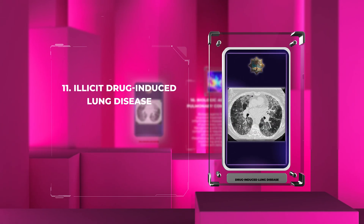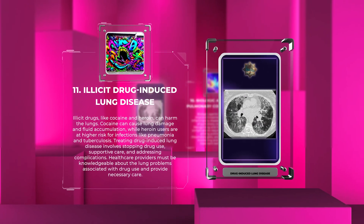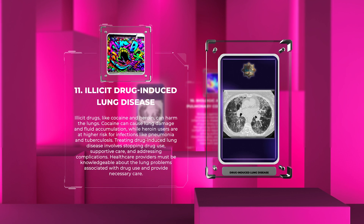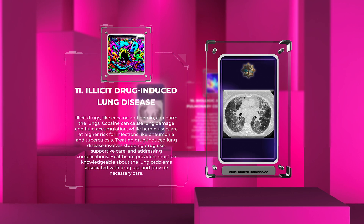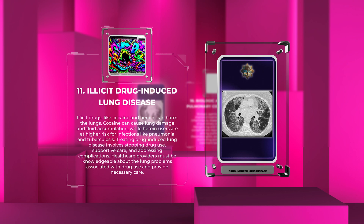Illicit drugs like cocaine and heroin can harm the lungs. Cocaine can cause lung damage and fluid accumulation, while heroin users are at higher risk for infections like pneumonia and tuberculosis. Treating drug-induced lung disease involves stopping drug use, supportive care, and addressing complications. Healthcare providers must be knowledgeable about the lung problems associated with drug use and provide necessary care.